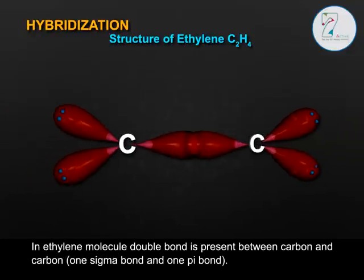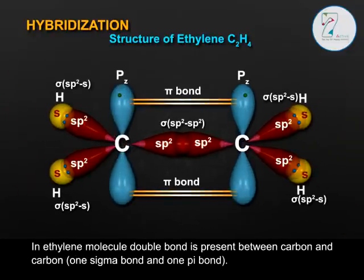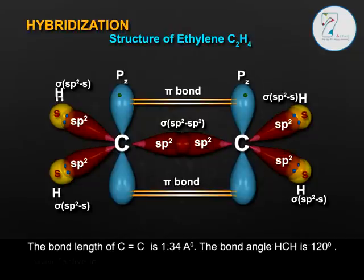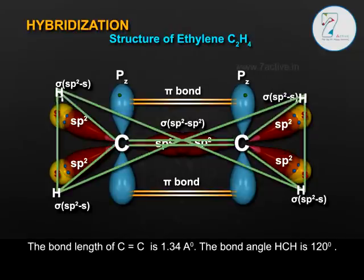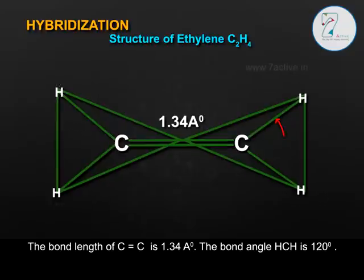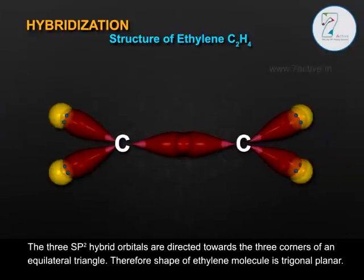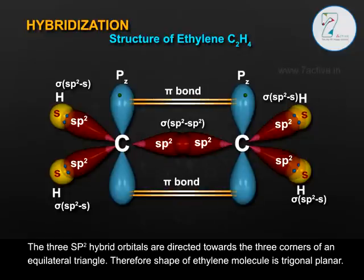In the ethylene molecule, a double bond is present between the two carbon atoms, consisting of one sigma bond and one pi bond. The bond length of C=C is 1.34 angstroms. The bond angle HCH is 120 degrees. The three SP2 hybrid orbitals are directed towards the three corners of an equilateral triangle. Therefore, the shape of the ethylene molecule is trigonal planar.